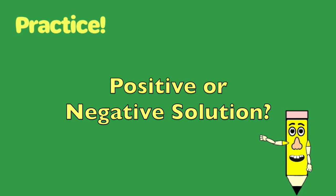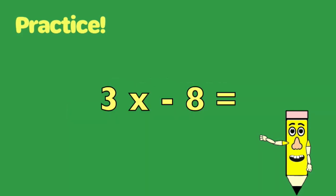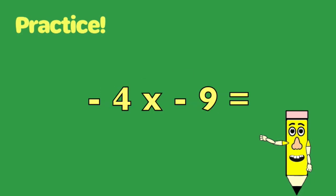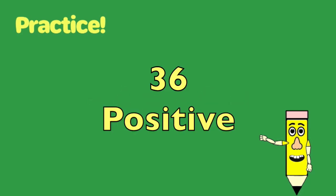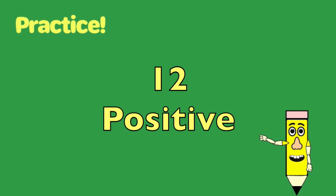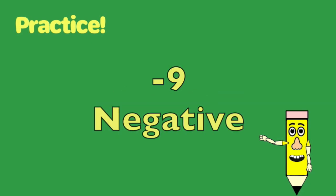Now let's practice a couple. Tell me whether the solution is positive or negative. Three times negative eight? Negative. Negative four times negative nine? Positive. Negative thirty-six divided by negative three? Positive. Fifty-four divided by negative six? Negative.